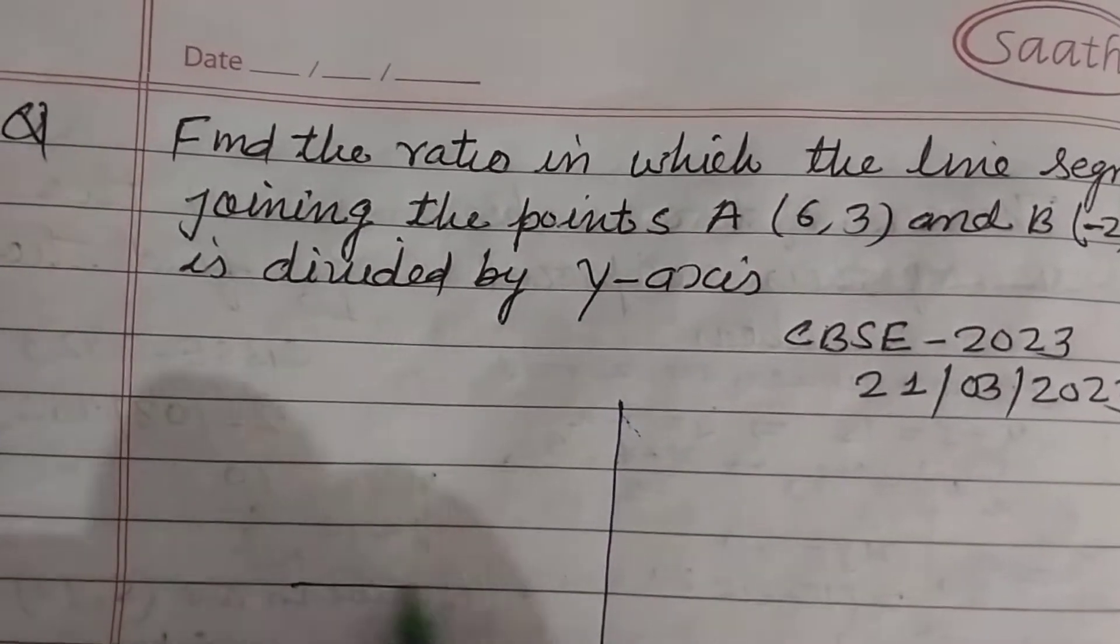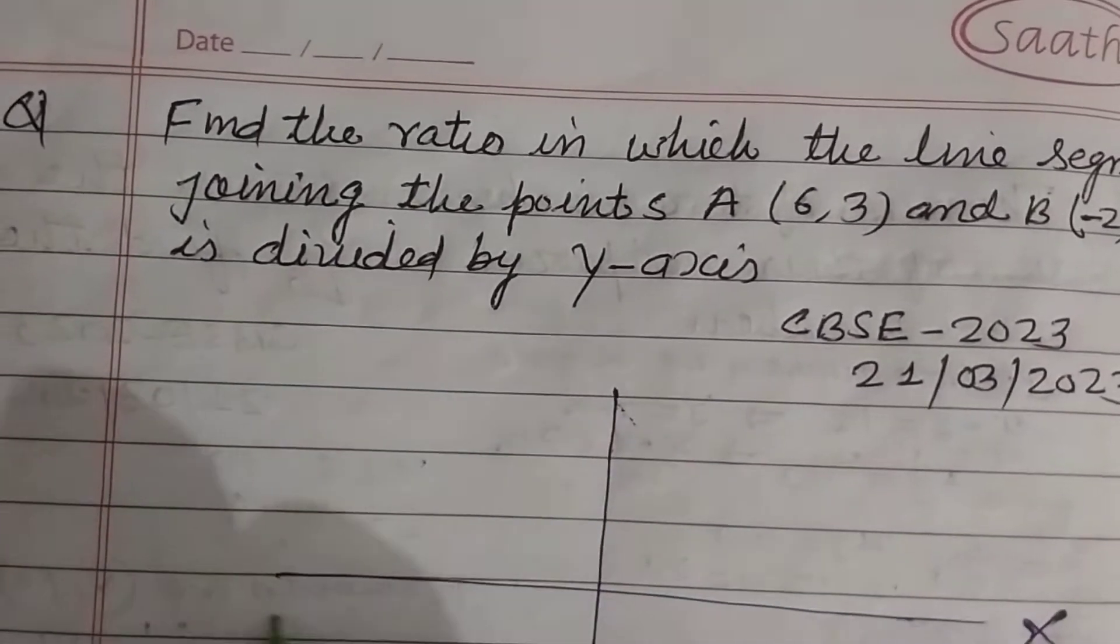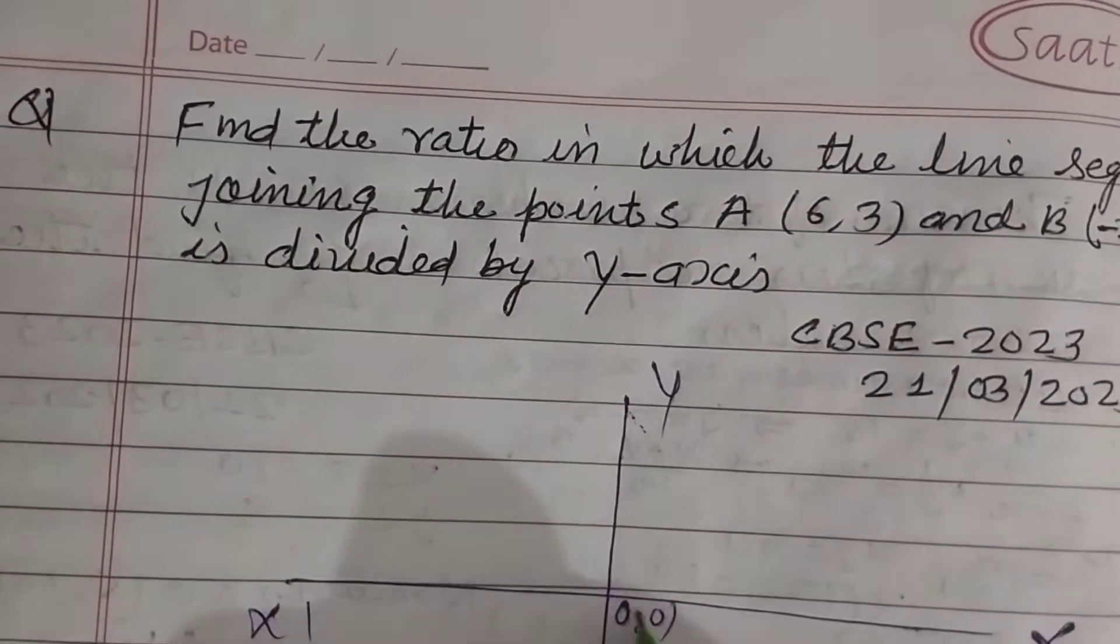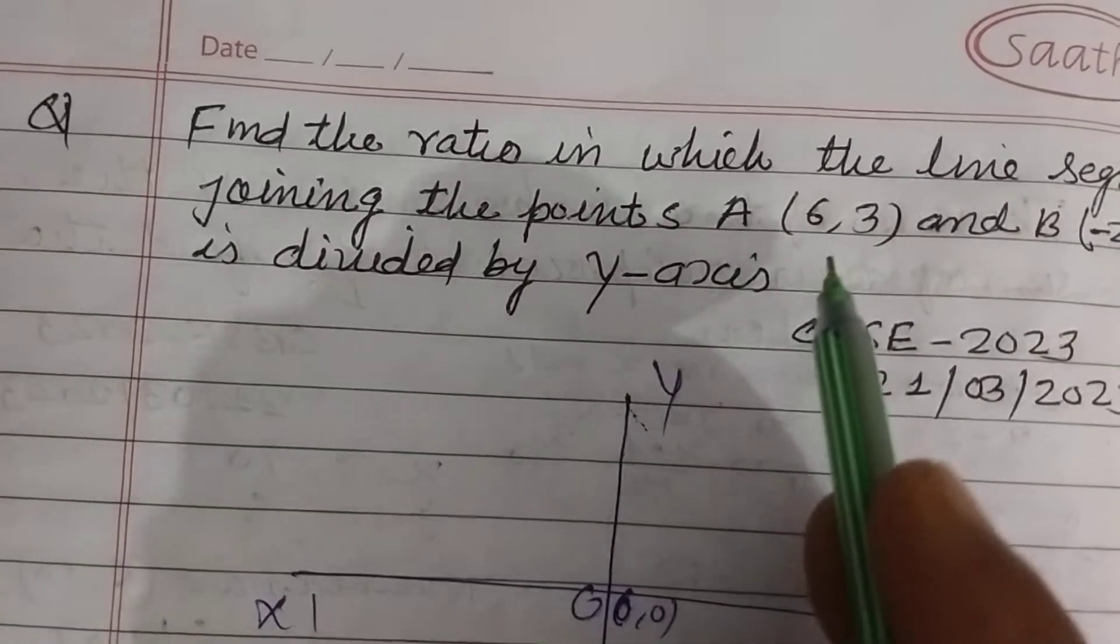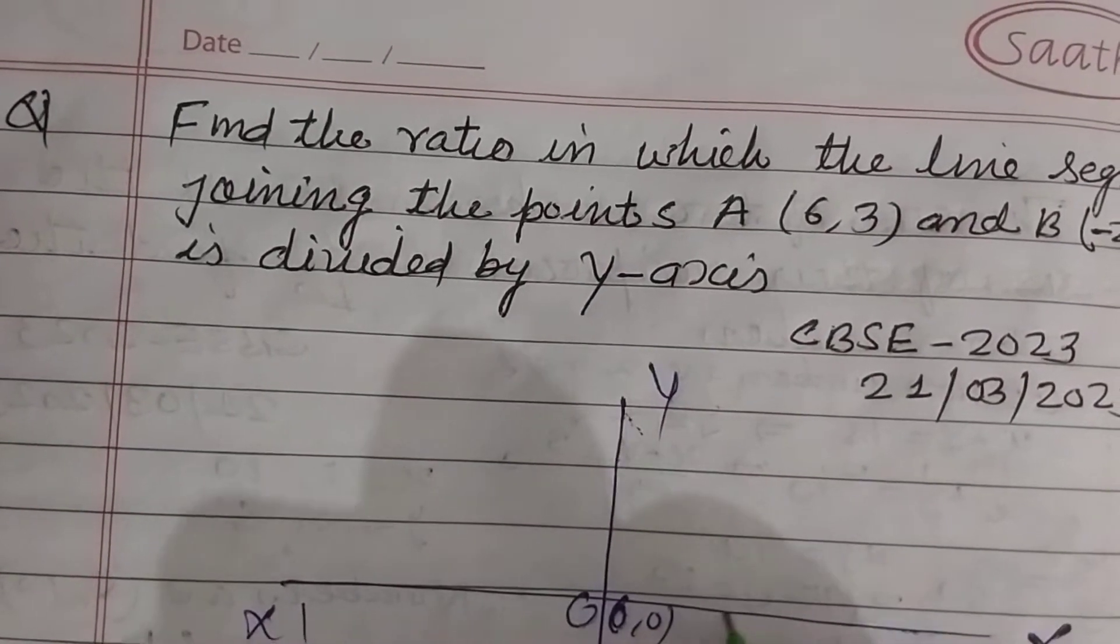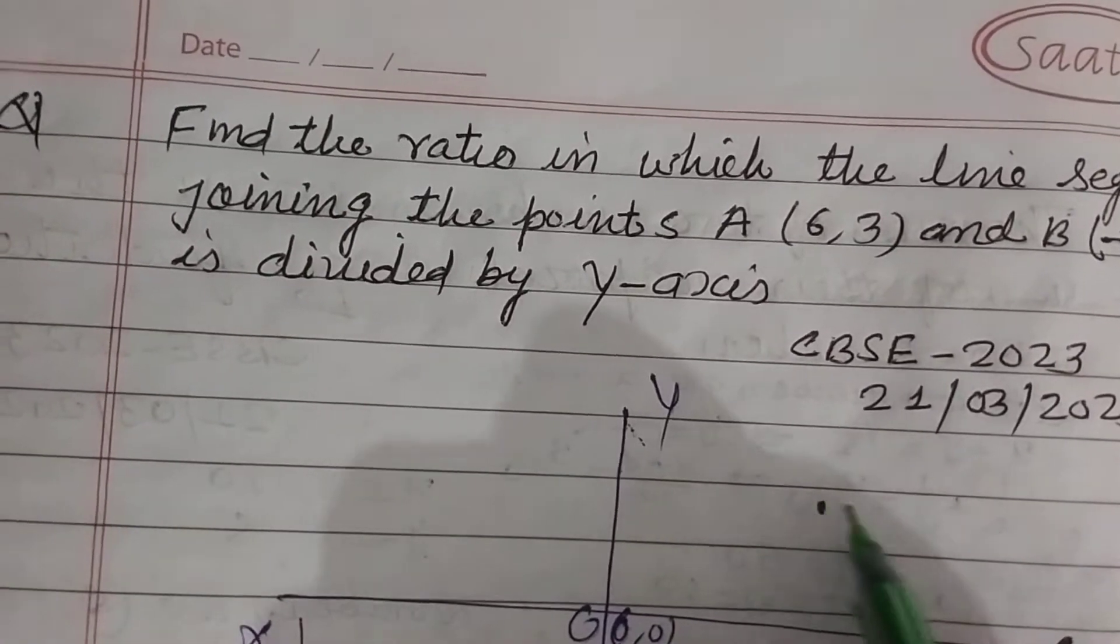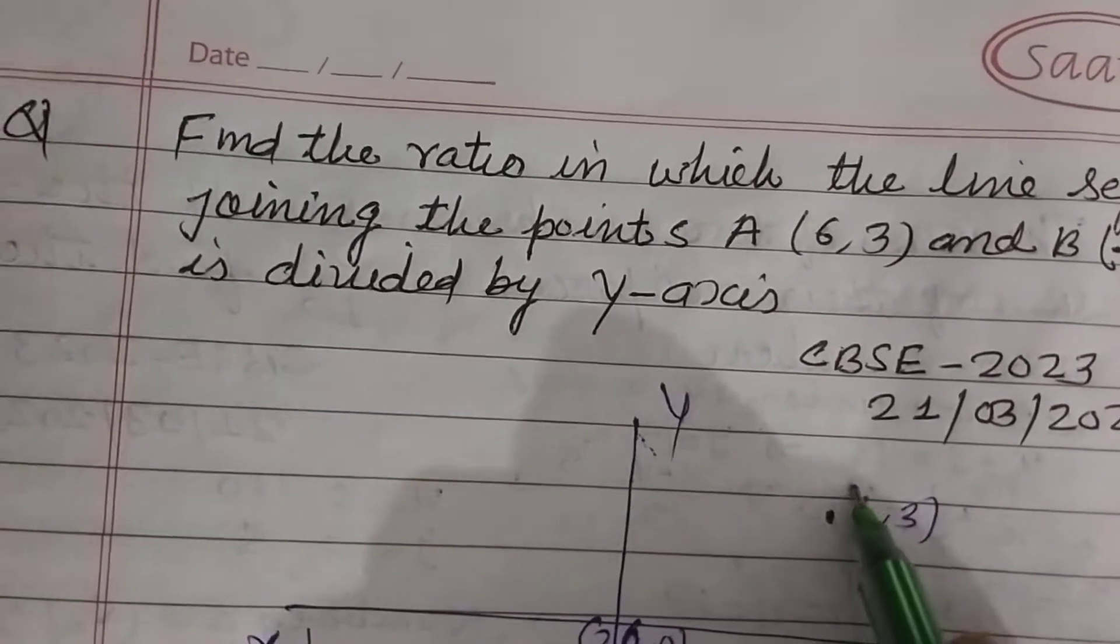So student, first we draw the Cartesian plane X, X dash, Y, Y dash, this is origin O, and (6,3) - 6,3 lie here.